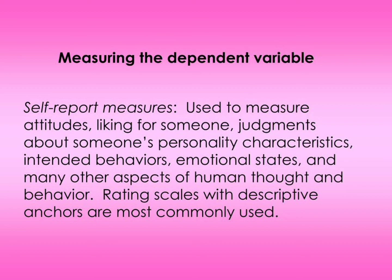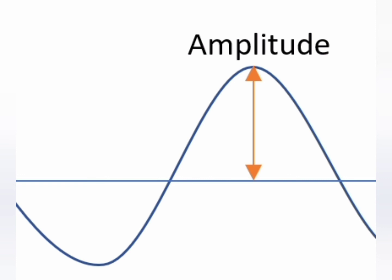Sometimes it is difficult to measure the dependent variable adequately with these techniques. In that case, one might devise a rating scale. For example, a rating scale for anxiety may have 5 gradations — it can be a 4-point, 5-point, or 6-point scale — used to assess a person's anxiety level.